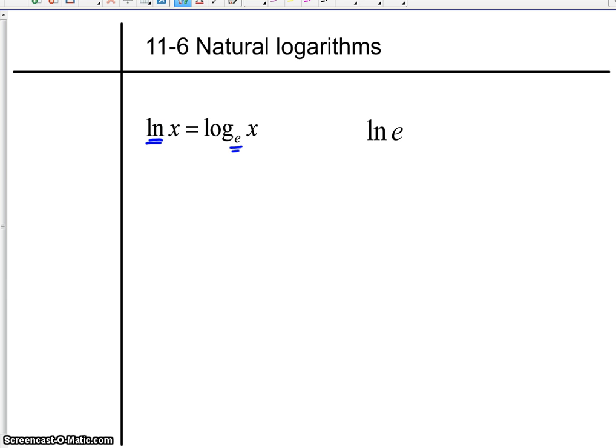Now, if I take the natural log of e itself, which we're going to run into here once in a while, what's going to happen is you can think about it this way: It's log base e of e to the first. Which, we talked about how when I take a logarithm of an exponential piece and they have the same base, they undo each other. So I'd be left with one.